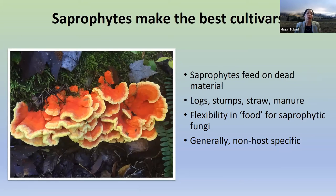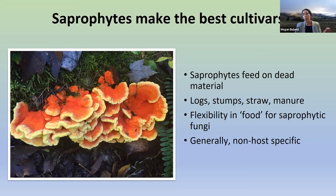Saprophytes, meanwhile, are much easier — they feed on dead and decaying matter: logs, stumps, straw. They have a lot of flexibility in the food that they'll eat. They're not super picky eaters — they're more like the kid who'll eat everything instead of the one who won't eat any of their veggies.